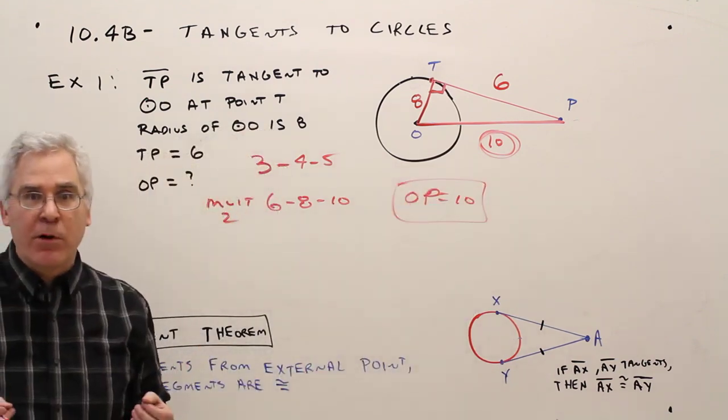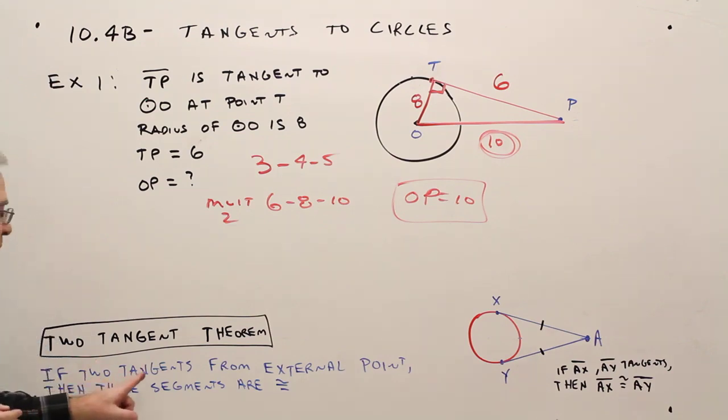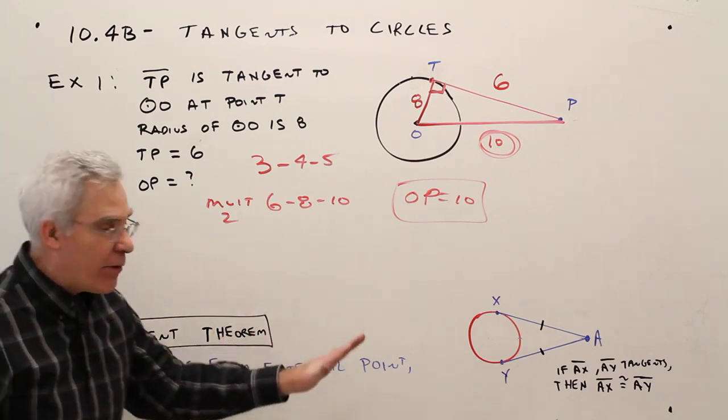Okay, pretty straightforward. Next, just the two tangent theorem. If two tangents are drawn from an external point to a circle, then those tangent segments are congruent. So here's a picture.